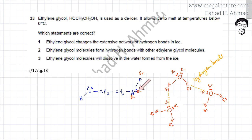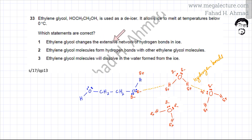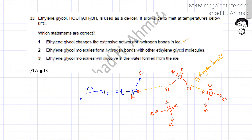Introducing a molecule of ethylene glycol into the structure of ice, the lone pairs on ethylene glycol — the negative charge — would start attracting the positive hydrogens of the water molecules. This means those hydrogen bonds in ice would break, because the positive hydrogen is now being attracted by the lone pairs of oxygen on ethylene glycol. So the first statement — ethylene glycol changes the extensive network of hydrogen bonds in ice — is correct. Water molecules now get attracted to ethylene glycol molecules, and hydrogen bonds can be created between water molecules and ethylene glycol molecules.